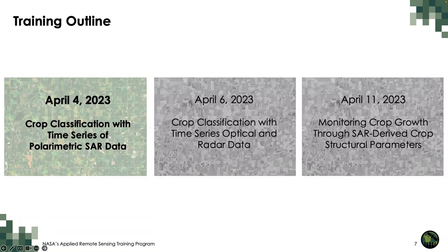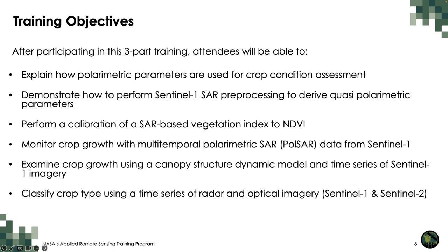This slide outlines what each part of the three-part training will cover from April 4th through April 11th. After participating in this training, attendees will be able to explain how polarimetric parameters are used for crop condition assessment, demonstrate how to perform Sentinel-1 SAR preprocessing to derive quasi-polarimetric parameters, perform a calibration of a SAR-based vegetation index to NDVI, monitor crop growth with multi-temporal polarimetric SAR data, examine crop growth using a canopy-structured dynamic model and time series of Sentinel-1 imagery, and classify crop type using a time series of radar and optical imagery from Sentinel-1 and Sentinel-2.